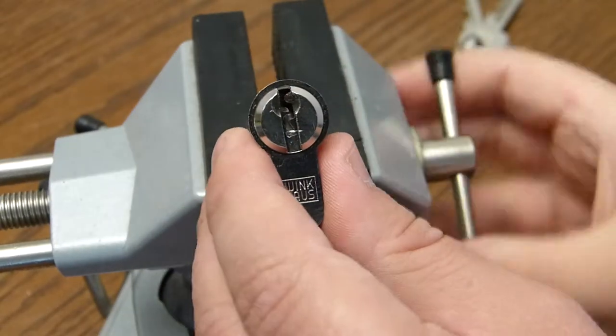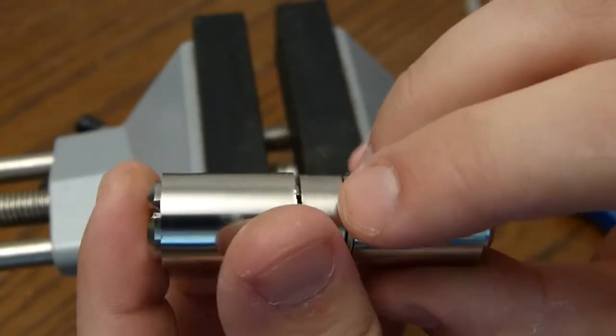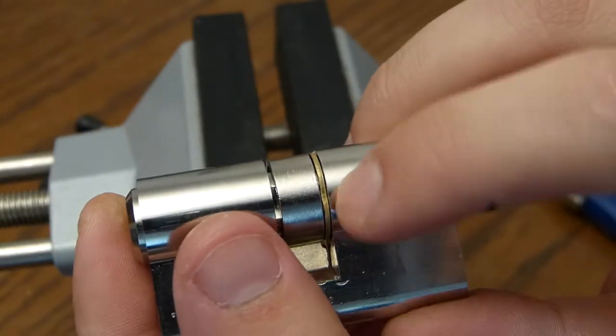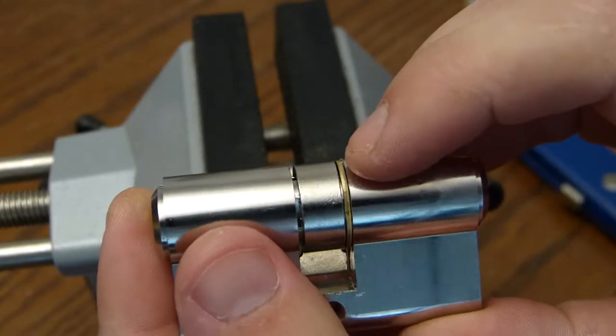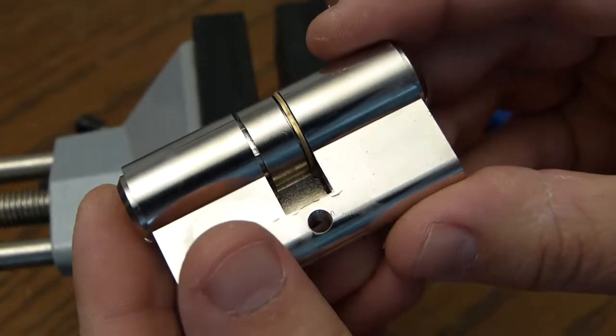But on these cylinders the circlip goes all the way around. They are made in the factory this way and are not supposed to be rekeyable, or that's our hypothesis.